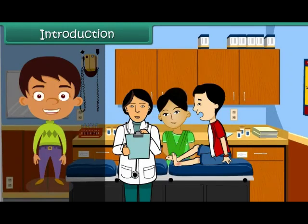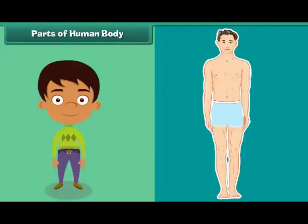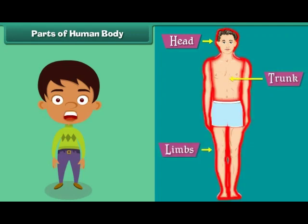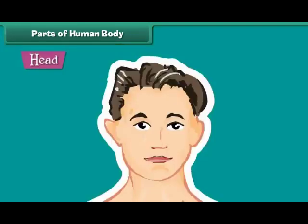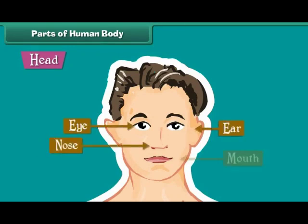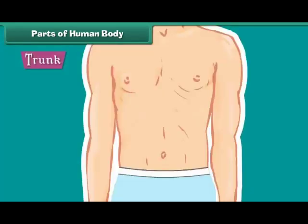Parts of the human body: The human body is divided into three main parts — head, trunk, and limbs. The head is the uppermost part of the body; eyes, ears, nose, and mouth are located on it. The trunk is the middle part of the body; it is divided into chest and abdomen.